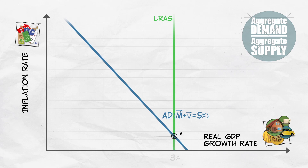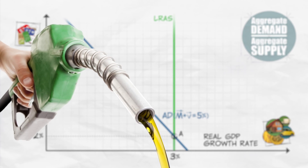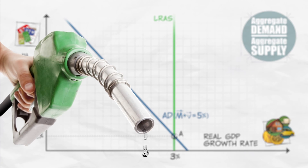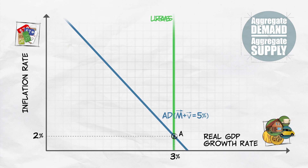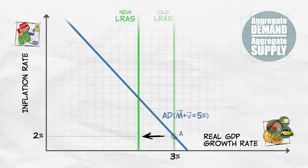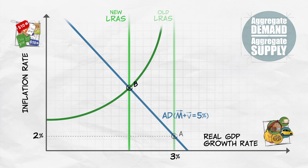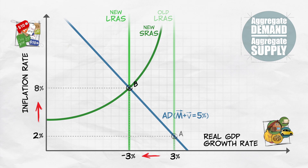Recall from earlier videos that a real shock, such as a rapid rise in the price of oil, will shift the long-run aggregate supply curve to the left, causing growth to decrease and inflation to increase.